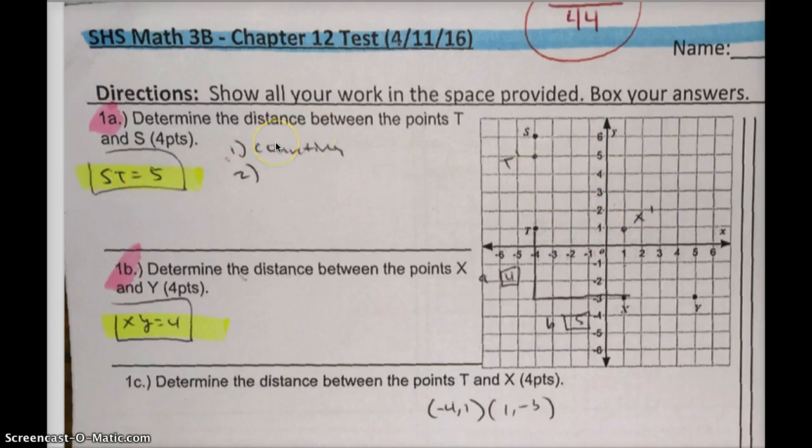I saw a lot of students not understanding. They saw the word distance and automatically tried to use the Pythagorean theorem or the distance formula. But again, if it's a vertical or horizontal, you can just count.